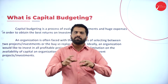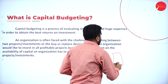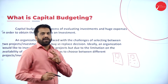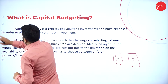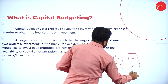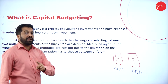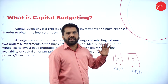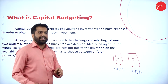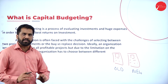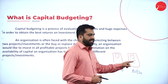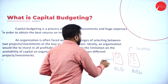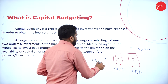Let me give you a simple example to understand Capital Budgeting. You have an old mobile at home — it is not working, it is out of order. There is a new mobile available in the shop. The new one will cost you around 10,000, and getting the old one repaired will cost 6,000.